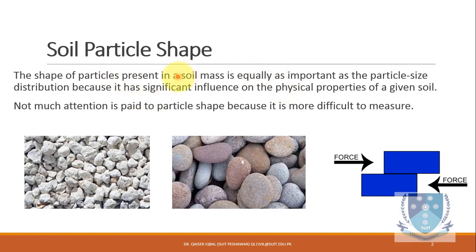Because the shape of particles is very important, not much attention is usually paid to it. We commonly consider soil to be a continuum medium, so we do not analyze each particle separately — this is known as a continuum mechanics problem. We determine the property of the overall material and consider it as a continuous medium, just like steel or any other material.